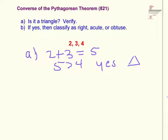And we have 5 is indeed greater than 4. So yes, we do have a triangle.